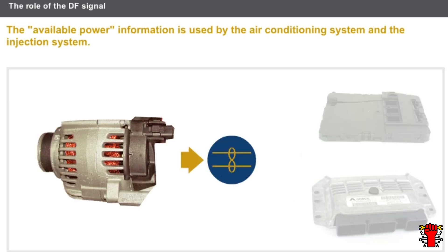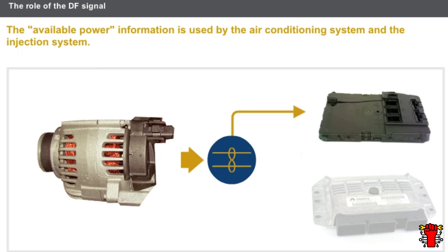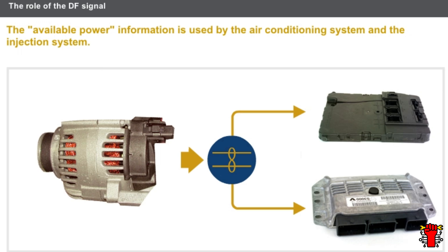The available power information is transmitted over the multiplexed network. This information is used by two systems: the air conditioning system, which determines the number of heating resistors that can be powered, and the injection system, which, if necessary, adjusts the idling speed so as to increase the alternator supply.